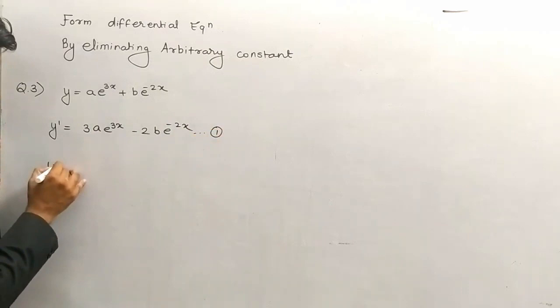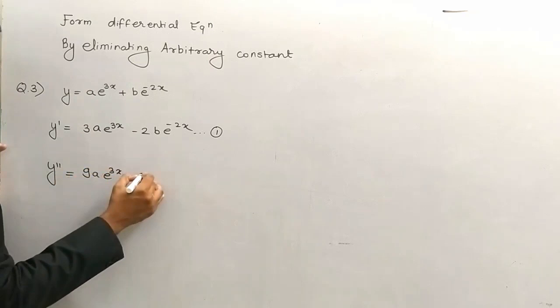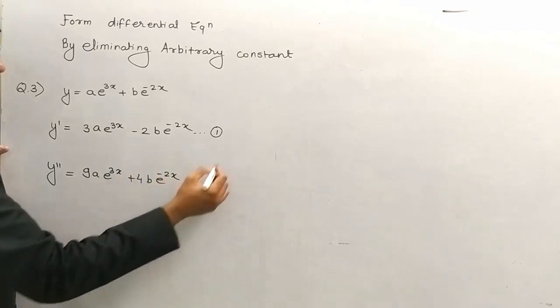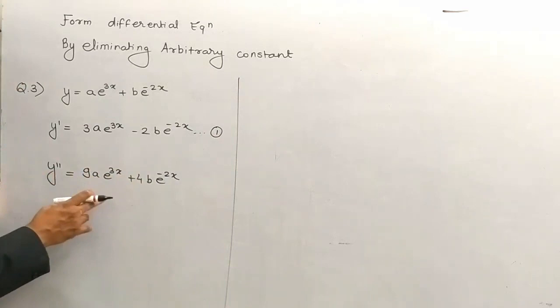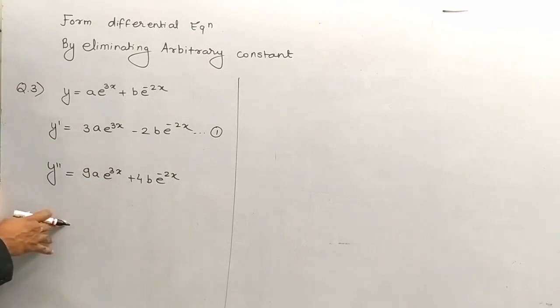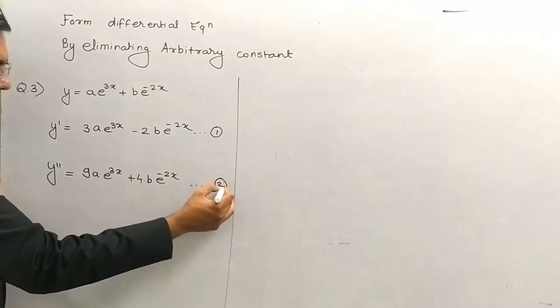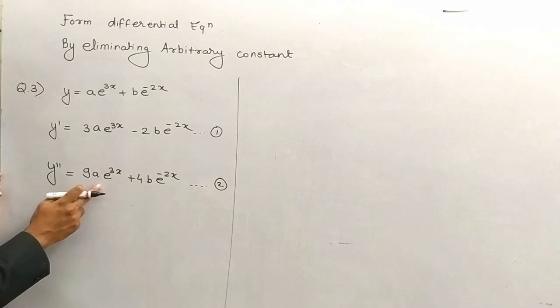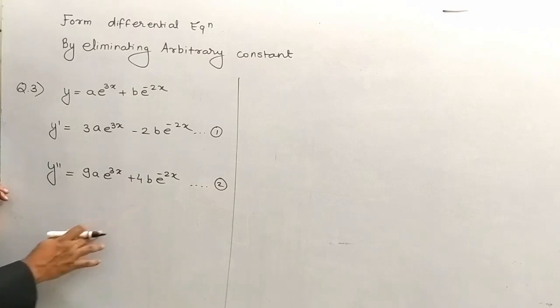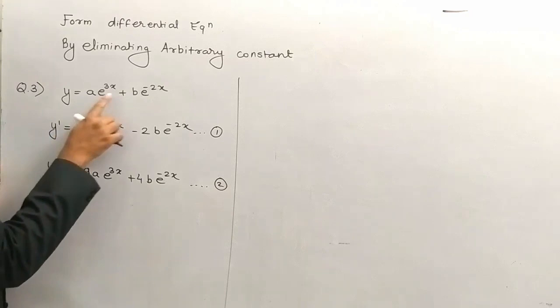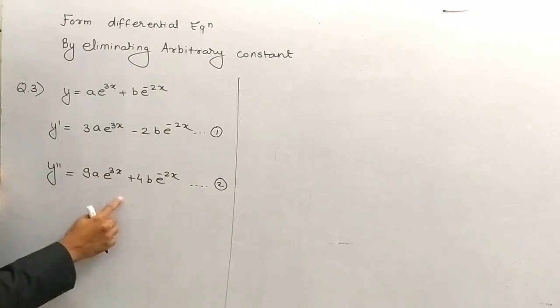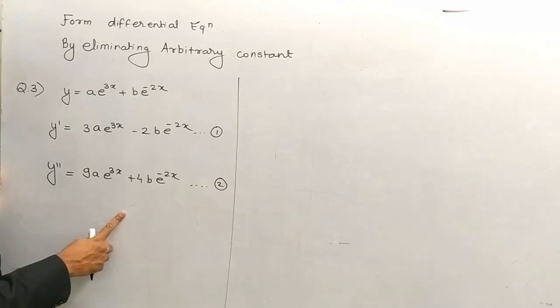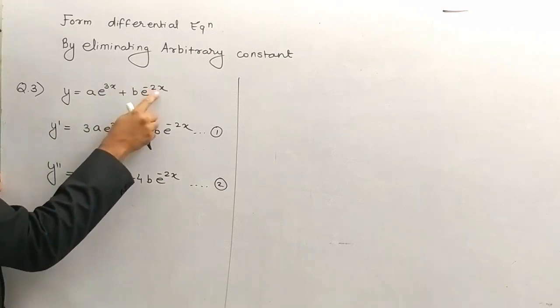a × e^(3x) ka derivative by chain rule aa jaega 3a·e^(3x), plus 2 — yeh hai the first derivative. Fir se derivative lo — toh jaega 9a·e^(3x) plus 4b·e^(minus 2x). Ab aapko kuch bhi karke aisa karna hai ki differential equation banana hai, but you need to resubstitute. Ab simple si baat hai — substitution ho hi nahi raha, because if you substitute a·e^(3x), it won't simplify directly.